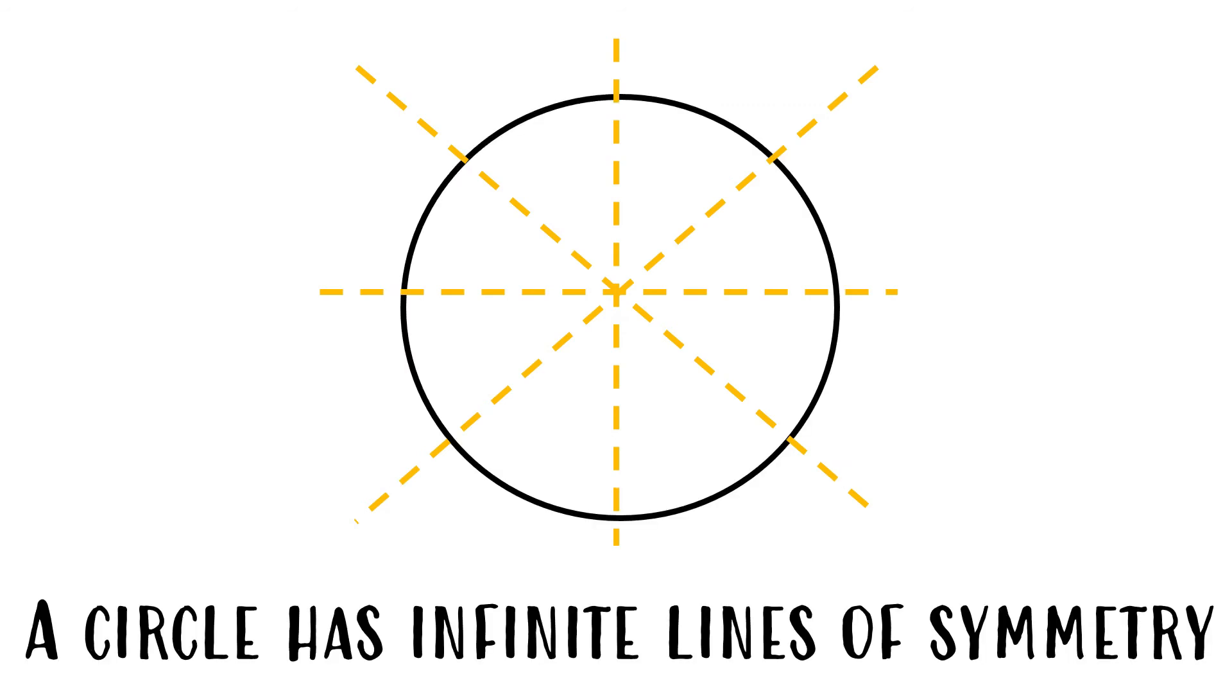A circle has infinite lines of symmetry. This means that a circle has lines of symmetry that just go on and on.